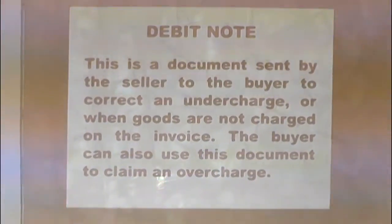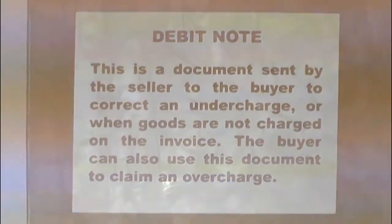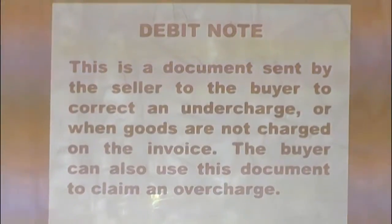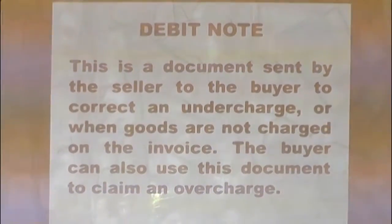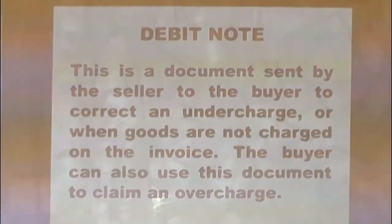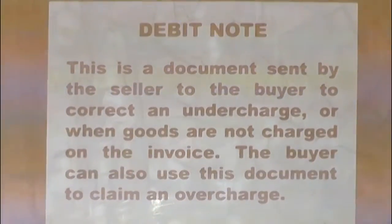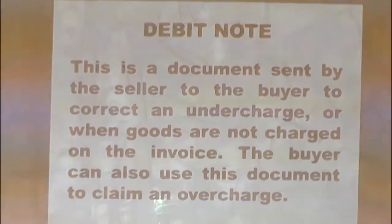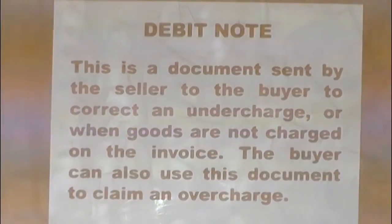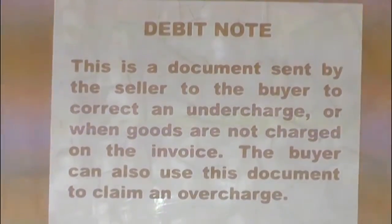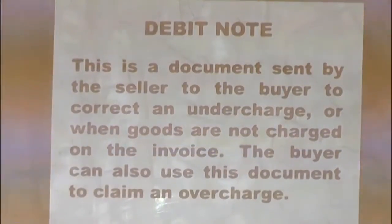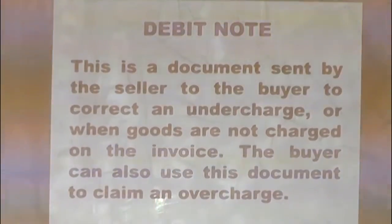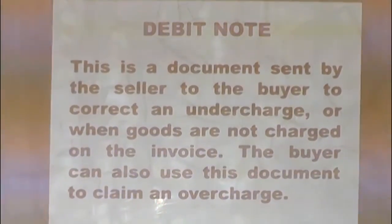Let's see another source of document, which is the debit note. This is a document sent by the seller to the buyer to correct an undercharge, or when goods are not charged on the invoice, the debit note is used to do that. If an invoice is sent and a good is missing inside the invoice — not recorded in the invoice — you can make use of the debit note to correct it.